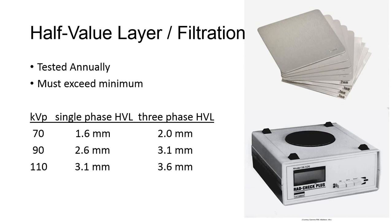Half value layer, or HVL, is defined as the amount of absorbing material required to reduce the X-ray beam to half its original value. We did an experiment in your exposure principles course to determine the half value layer of the beam, using different aluminum filters of varying thickness. As a QC test, you can expose the ion chamber with a set MA, exposure time, and KVP combination that will produce a substantial reading with no absorber over the chamber.